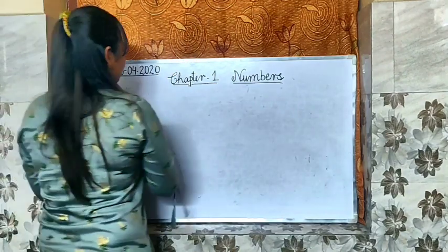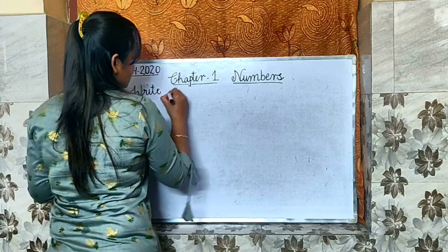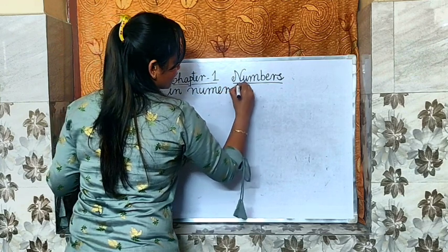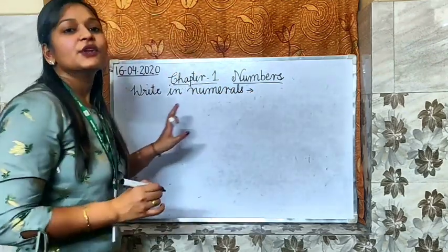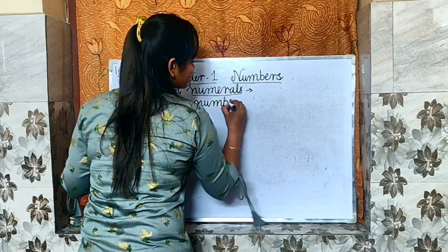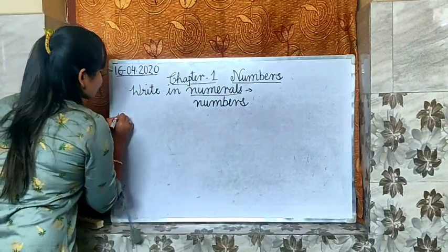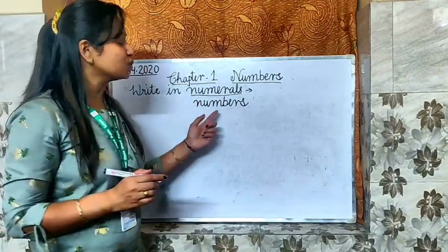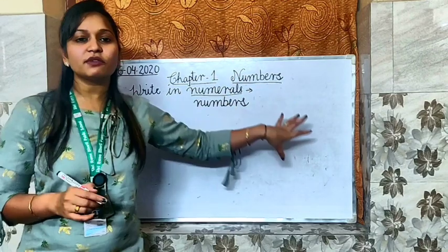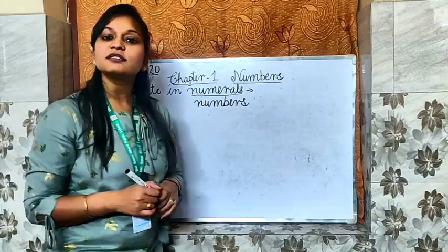Our next topic is writing numerals. So kids, what are numerals? Numerals are the numbers only — we refer numerals as numbers only. These both things are the same. It simply means if a number name is given to you, write its number. Just now we started with a number given and we wrote the number name. Now in the question, a number name will be given and we will write its number.